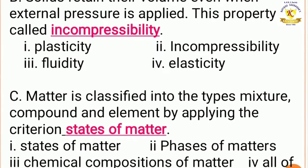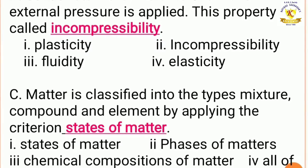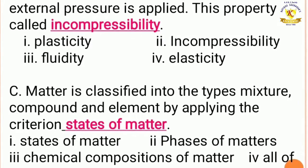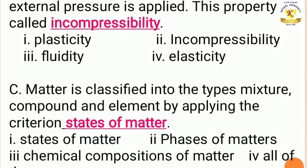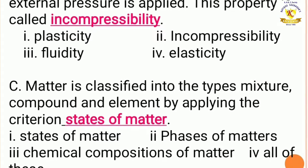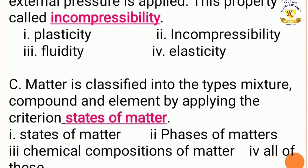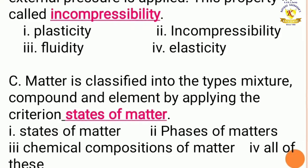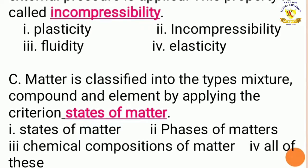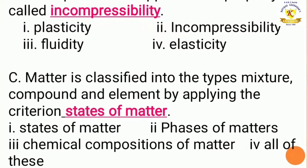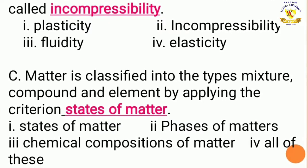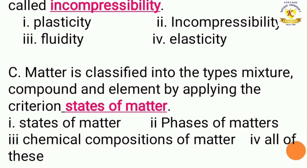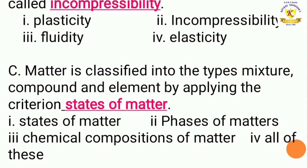Matter is classified into types — mixture, compounds and elements — by applying the criterion blank. The answer, from the following options, is states of matter.